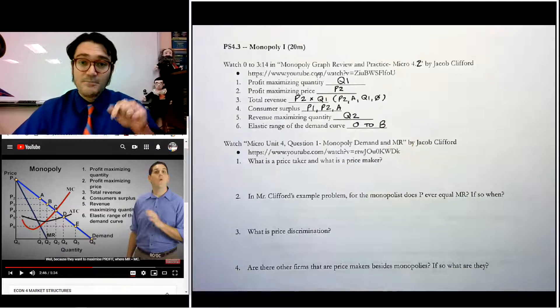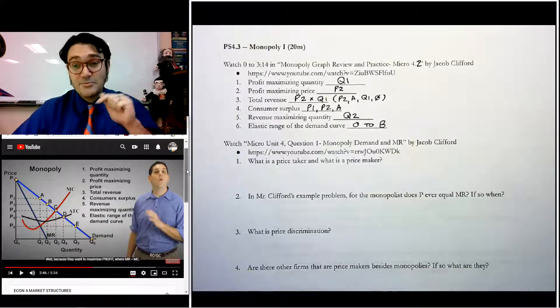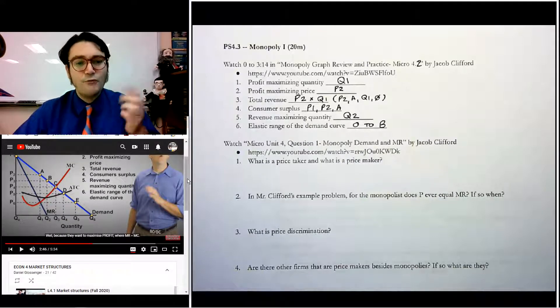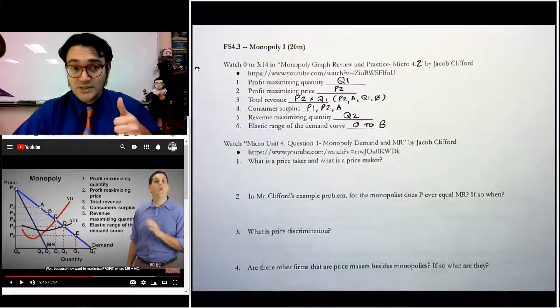So go ahead, pause this video, open up Monopoly Graph Review and practice. It's called Micro 4.2 by Jacob Clifford. It's in the playlist. Pause this video.